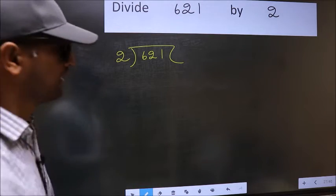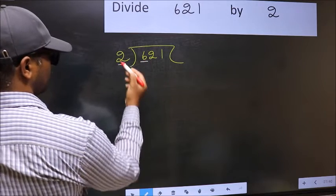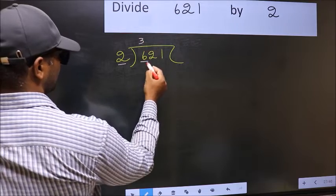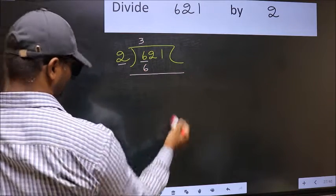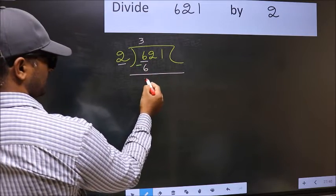Here we have 6 and here 2. When do we get 6 in 2 table? 2 threes, 6. Now you should subtract. 6 minus 6, 0.